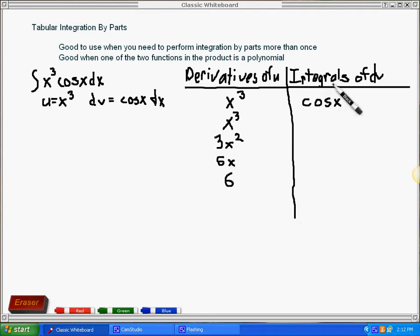On the other side, the second column, I keep taking the integrals. Cosine x, the integral of that is sine x. And the integral of that is negative cosine x. The integral of that is negative sine x. And finally, the integral of that is cosine x.